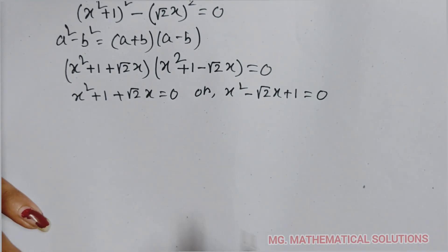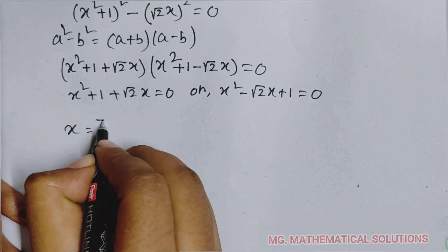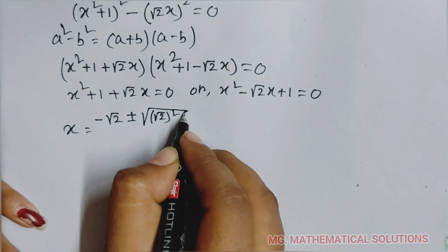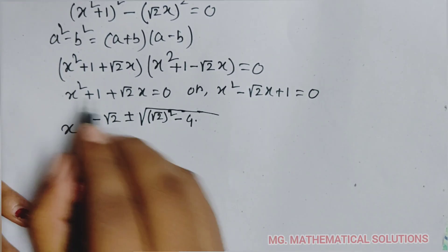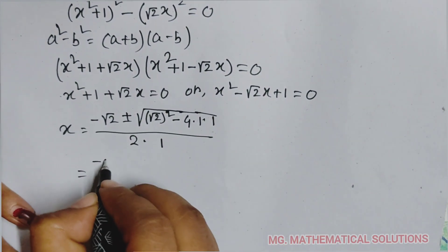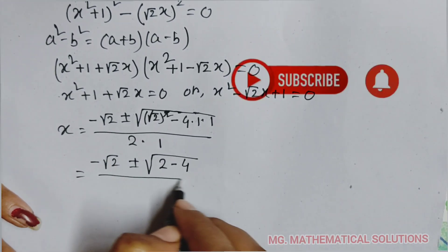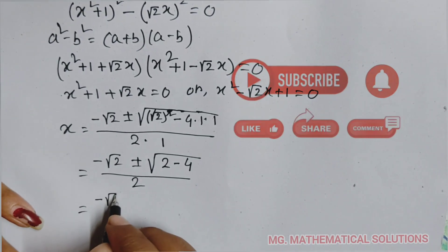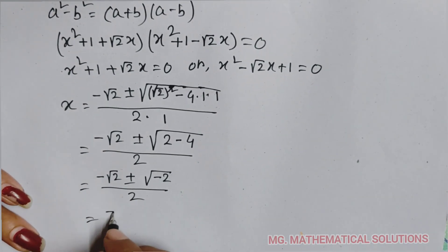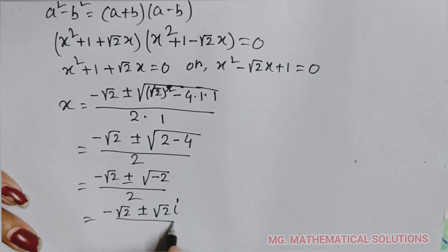Now we use the Sridharacharya formula. For the first equation, a equal to 1, b equal to root 2 and c equal to 1. So x equal to minus root 2 plus or minus root under root 2 squared minus 4 into 1 into 1, all divided by 2 into 1. This simplifies to minus root 2 plus or minus root of 2 minus 4, divided by 2, equal to minus root 2 plus or minus root of minus 2, divided by 2.